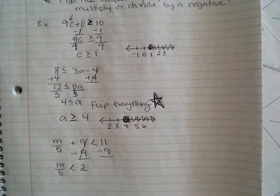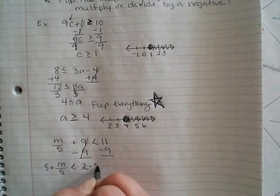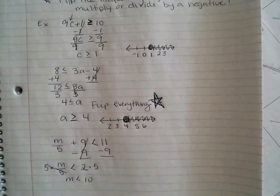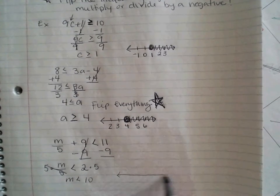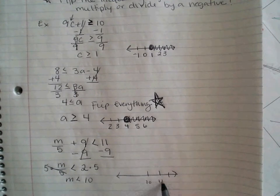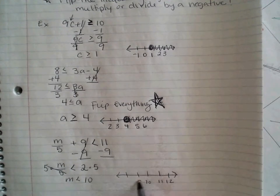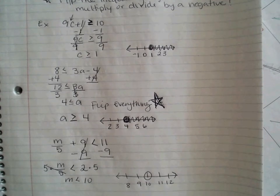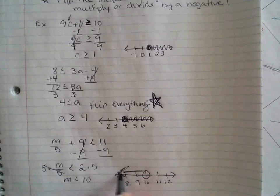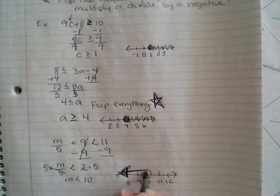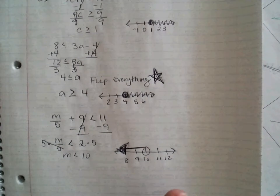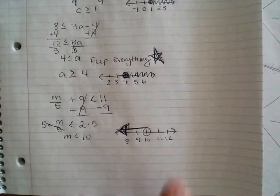Bring down my less than 11 minus 9 makes 2. This is division. Opposite of division is multiplication. So I'm going to multiply both sides by 5. Cancels out. 2 times 5 is 10. Bring down everything. When I graph this, 10, 11, 12, 9, and 8. Open circle because there's no equal to sign. And I'm going to shade to the left. Remember, either way you want to shade is okay.